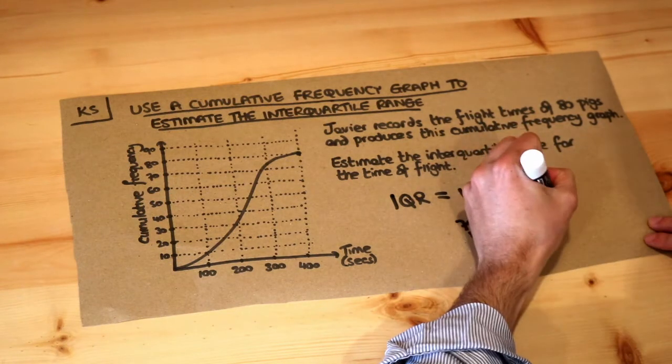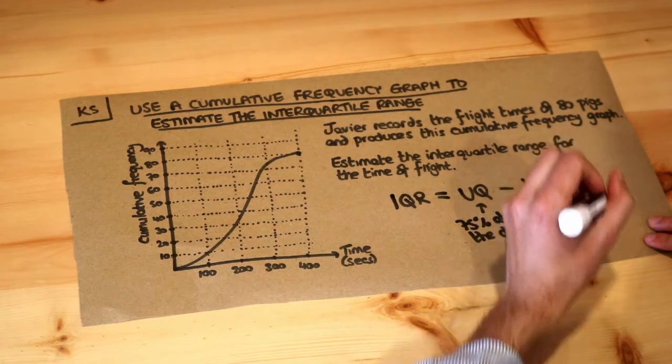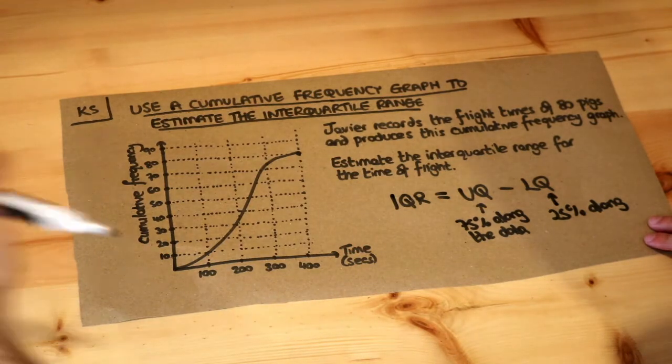And then you might be able to guess the lower quartile is 25% along the data. So what is the flight time of the pig a quarter of the way up from the pig with the smallest flight time?